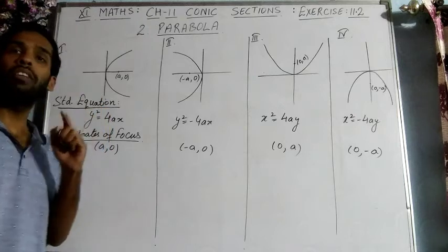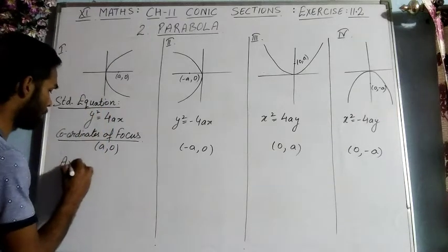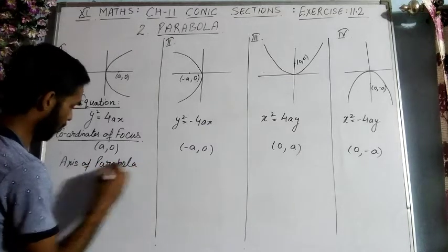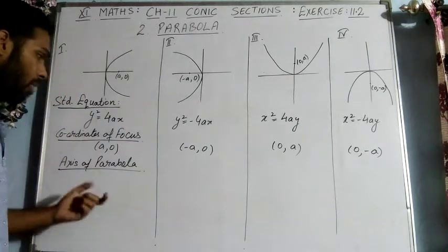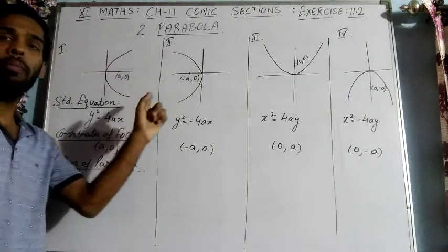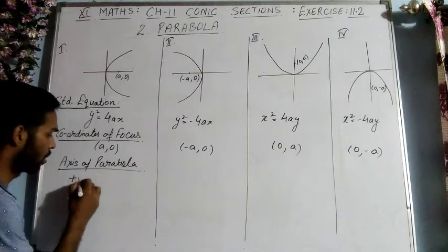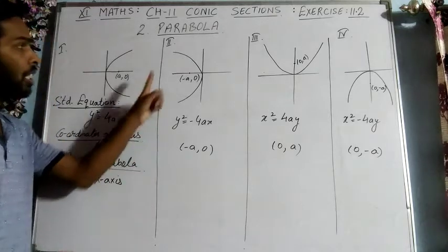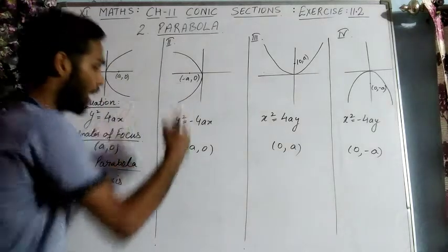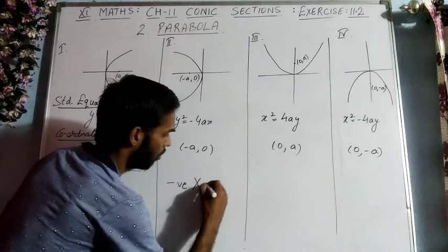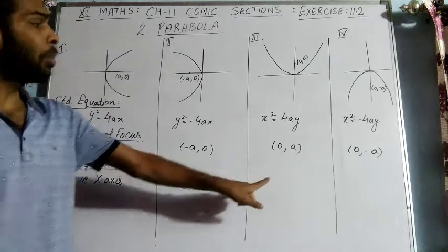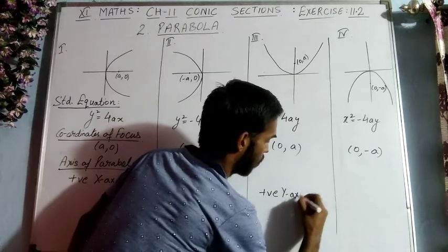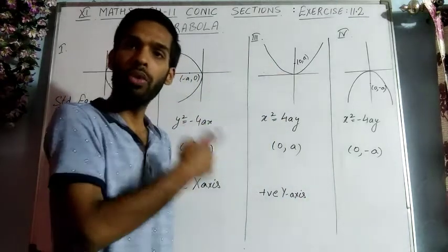The next property is the axis of the parabola. The axis is the axis about which the parabola is symmetrical. For the first type it is the positive x-axis, for the second it is the negative x-axis, for the third it is the positive y-axis, and for the fourth it is the negative y-axis.